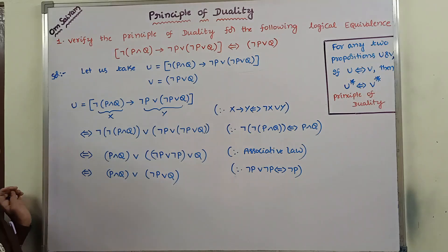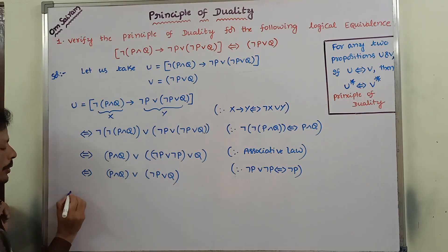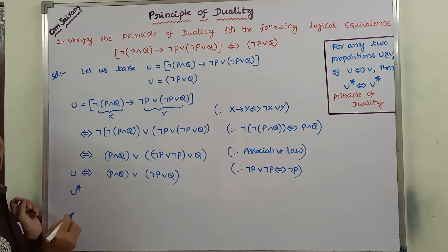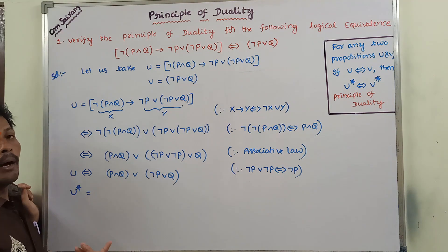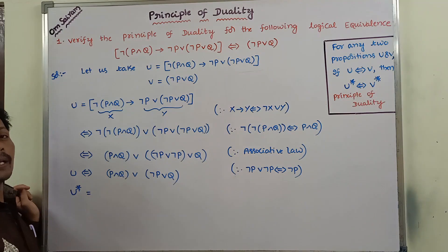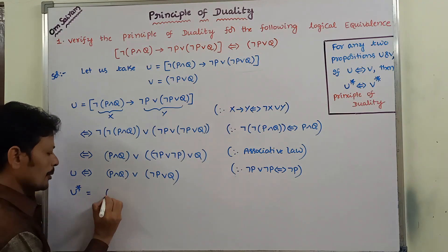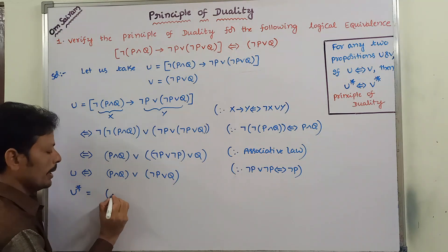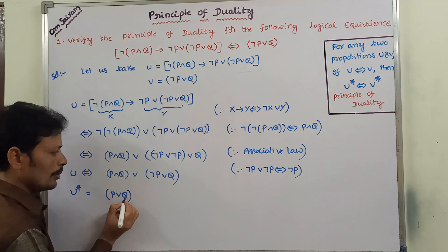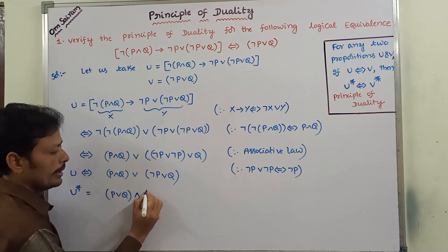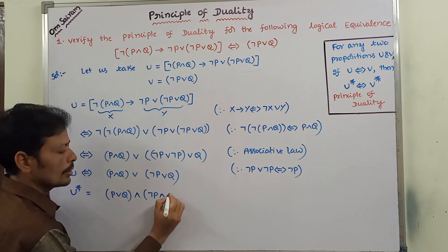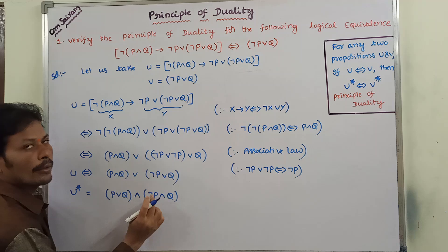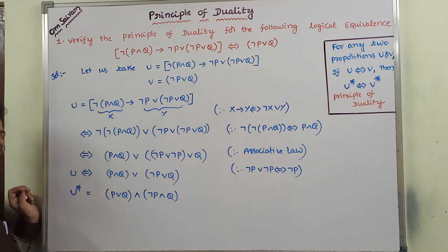Now we have to apply the dual to this U. The dual of U is U star. How we get the dual: AND can be replaced by OR, and OR can be replaced by AND. So P and Q becomes P or Q, and negation P or Q — the OR is replaced as AND — so negation P and Q. Therefore the dual of negation P or Q is negation P and Q.